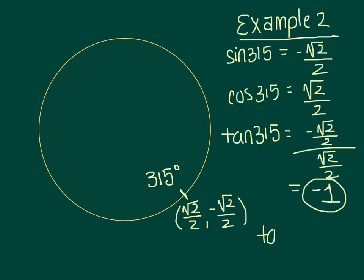So if I was going to write it all out, I would say the tangent of 315 degrees equals negative 1.